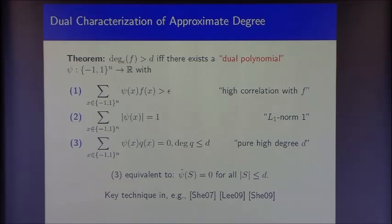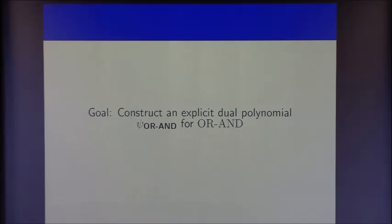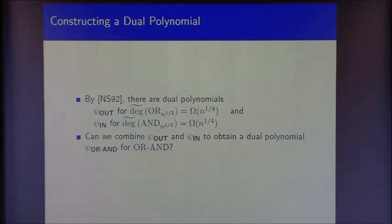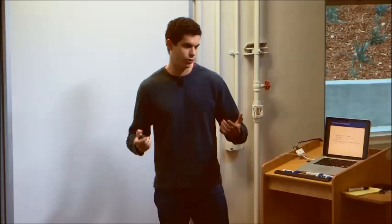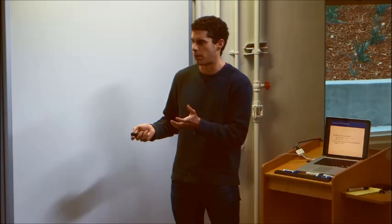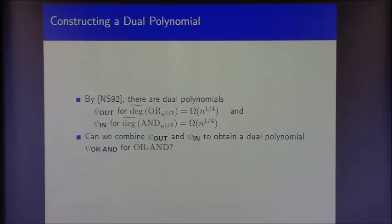Intuitively, psi captures the part of f that is of pure high degree — completely missed by low-degree polynomials. If this part of f is significant in the sense that it's well correlated with f, then any degree-d approximation must have large error. Our goal now is to construct an explicit dual polynomial for the OR-AND tree. A natural approach: by Nisan and Szegedy's result, the approximate degree of OR and AND on n^{1/2} variables is n^{1/4} for each. So there exist dual polynomials ψ_out and ψ_in for each of these functions. The question is whether we can combine them to get a dual polynomial for the composed function OR∘AND.